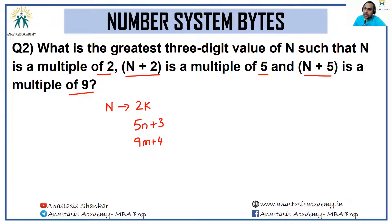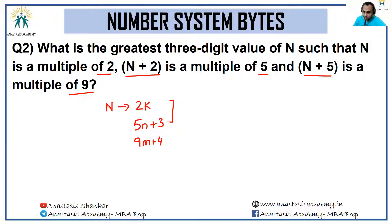Now I have to combine these three families of numbers, two at a time. Combining 2k and 5m + 3: I need a number that leaves a remainder of 3 upon division by 5 and is divisible by 2. The easiest such number is 8. That number exists after every LCM of 2 and 5, so every 10n + 8 kind of number — be it 8, 18, 28, 38 — follows both families.